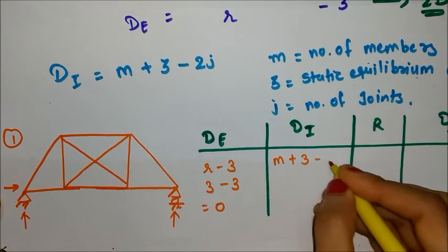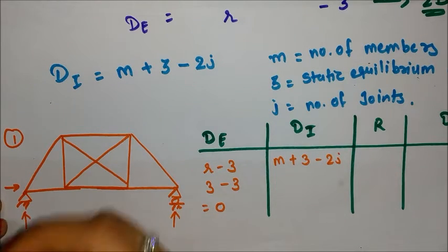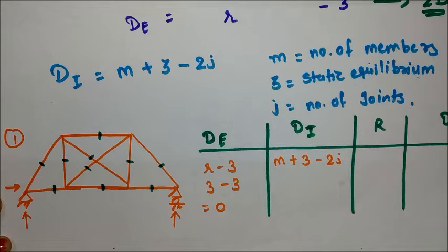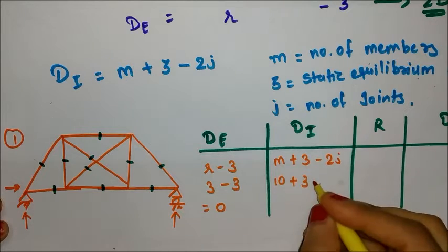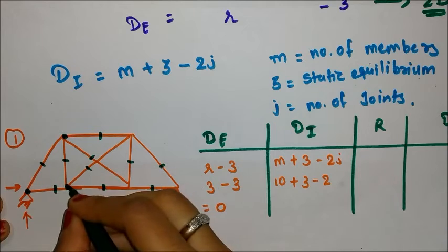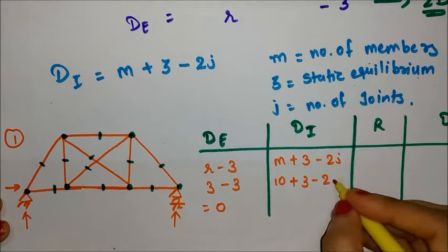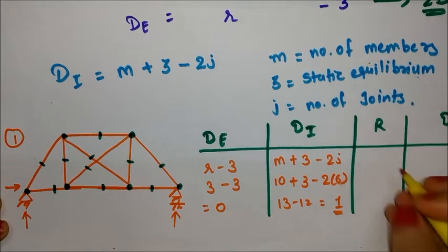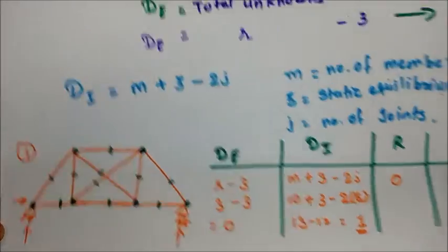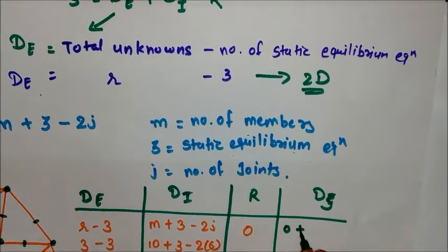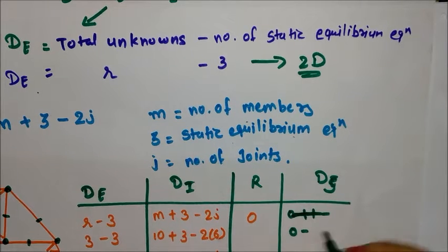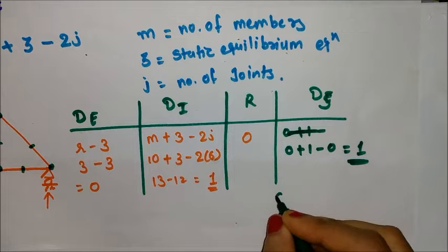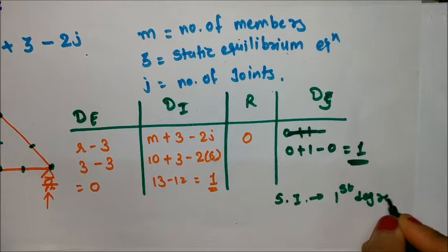Now let's talk about DI: m plus 3 minus 2j. Let's calculate the number of members — one, two, three, four, five, six, seven, eight, nine, and ten — so we have ten members. Plus 3, minus 2 times the number of joints. We have joints: one, two, three, four, five, and six — so six joints. That gives us 13 minus 12, equal to 1. We don't have any internal hinges or releases, so finally DS equals zero plus one minus zero, which is equal to one. My structure is statically indeterminate to the first degree.